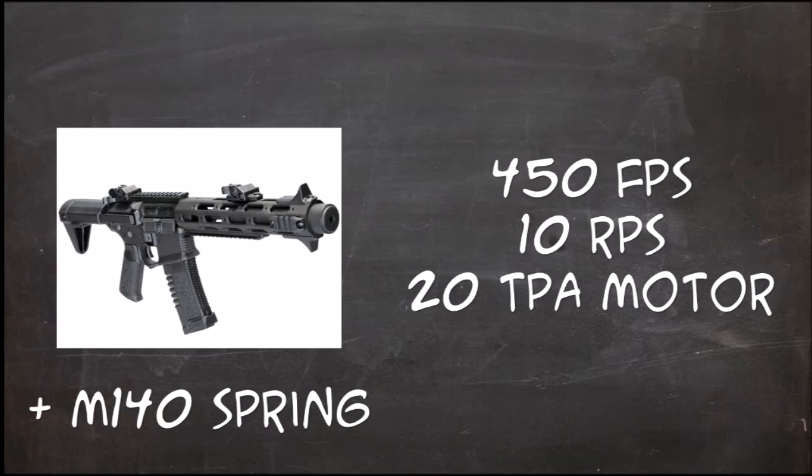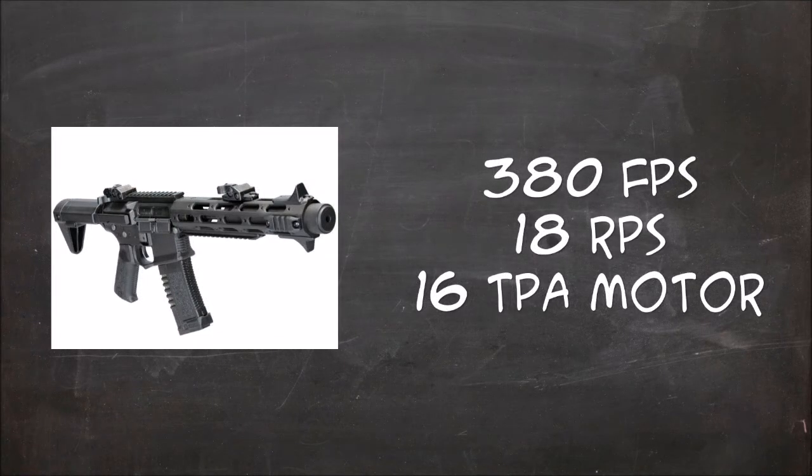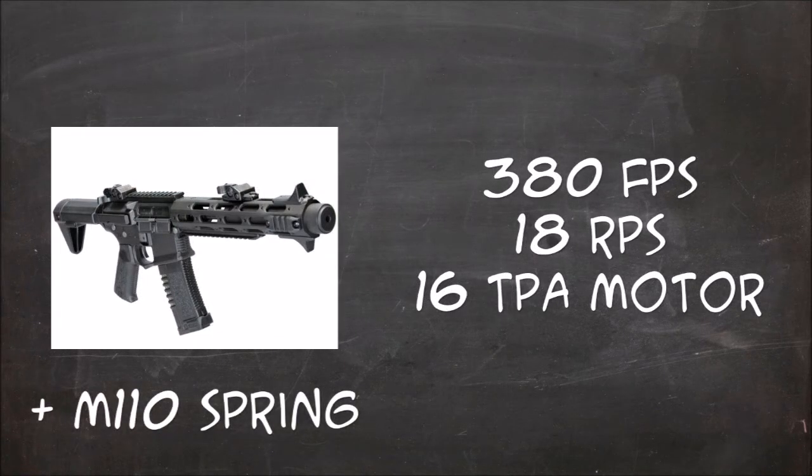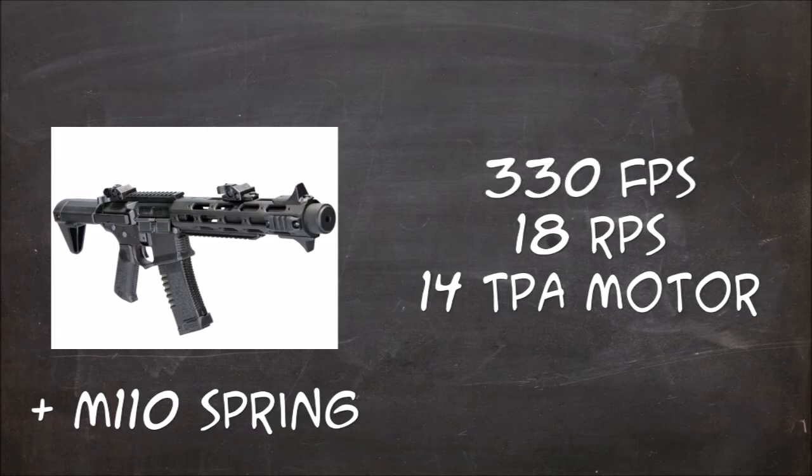For a high RPS build, you can change the spring to an M110 and either keep the same motor or go to a 14 TPA motor. Because of the decreased strain and you benefit from the higher RPM of the motor, the gun will end up with roughly 330 FPS and the RPS would jump to roughly 24.